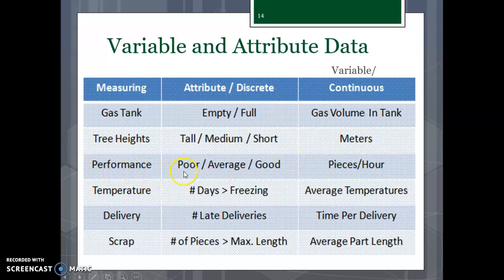Now performance. You could say someone is a poor performer, an average, or a good performer. That would be your discrete piece. Variable would be, well, how much did you get done in a certain amount of time? That's your performance. Temperature. You could say how many days were above freezing, or as discrete data. Or you could look at variable data and say, well, these are the average temperatures over time. And then so on, and you can just look through the rest of them.